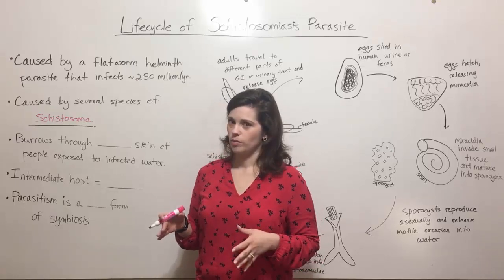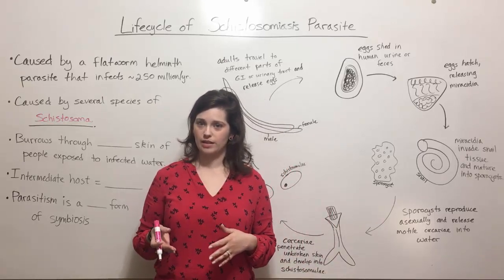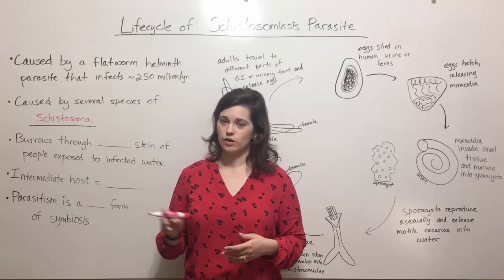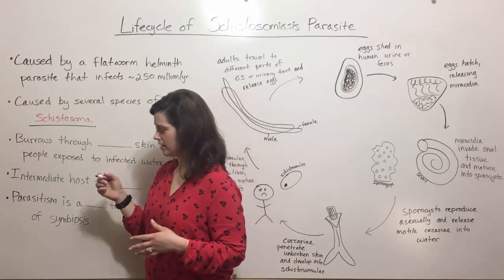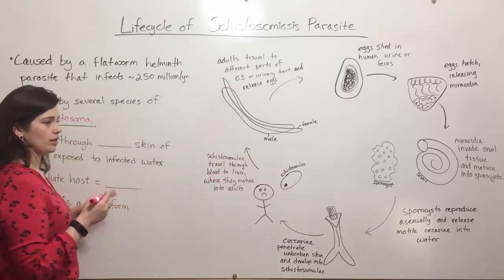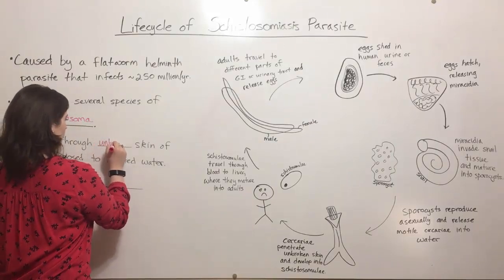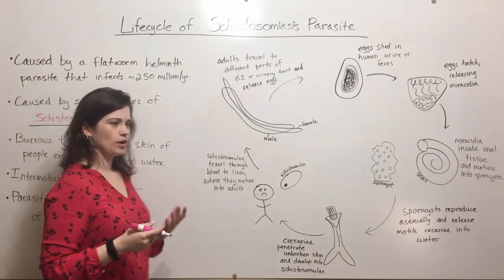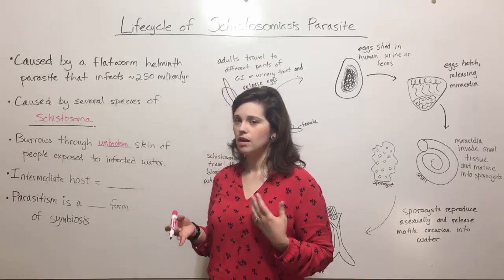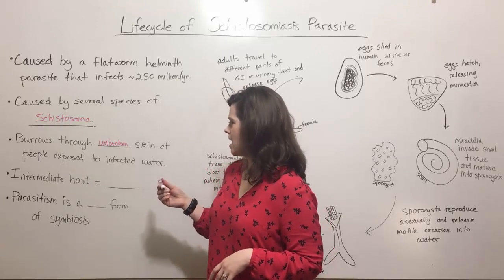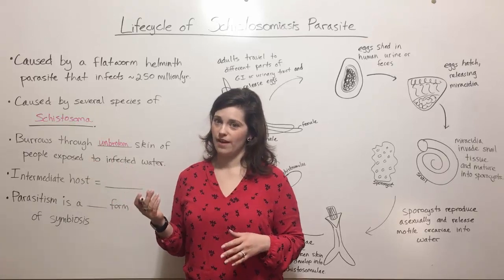Like hookworm, which is another parasite I have a video about, the schistosoma parasite also burrows directly through unbroken skin of the host. It does not need a cut in the skin through which to enter — it can burrow through healthy, unbroken skin.